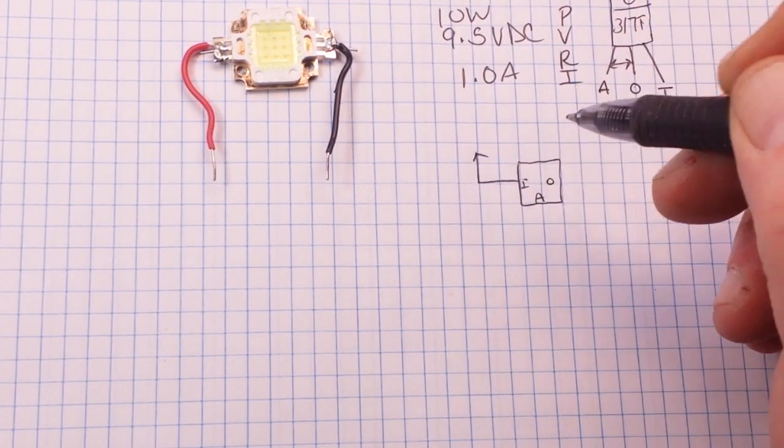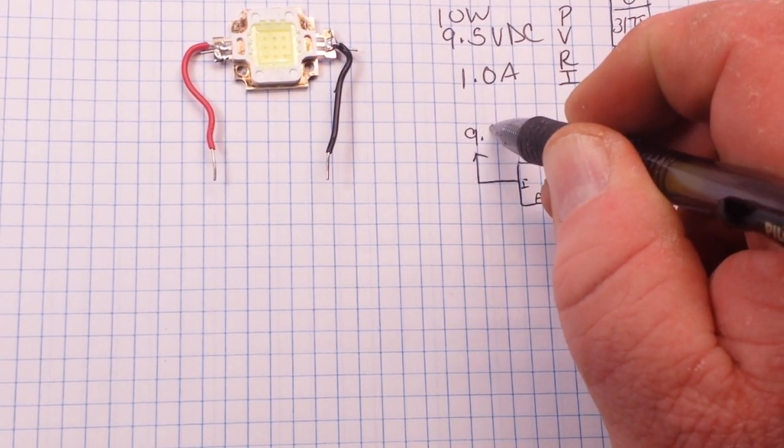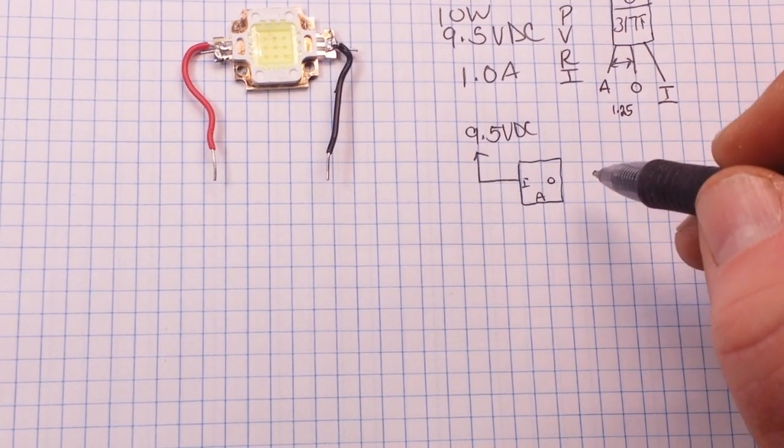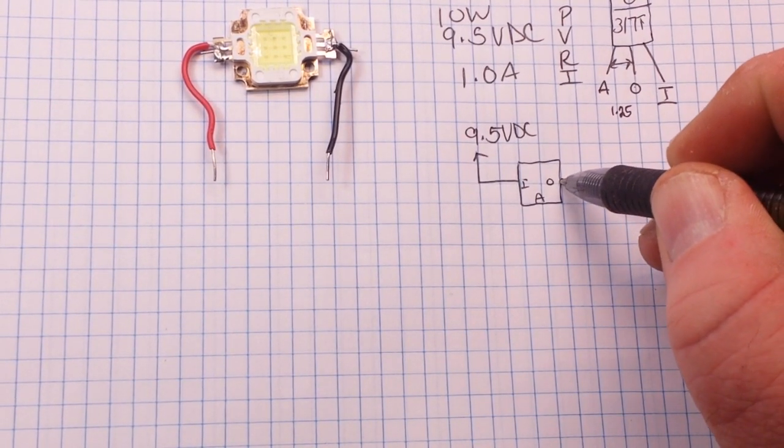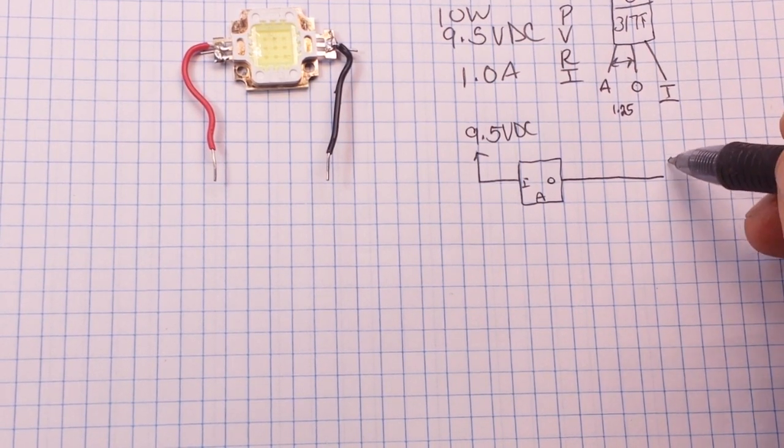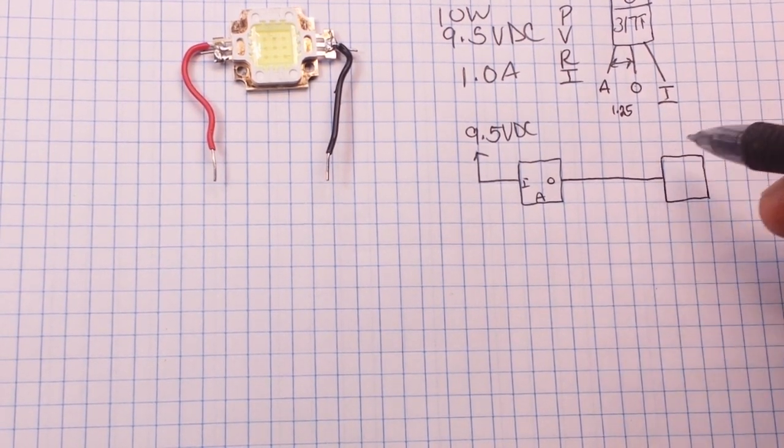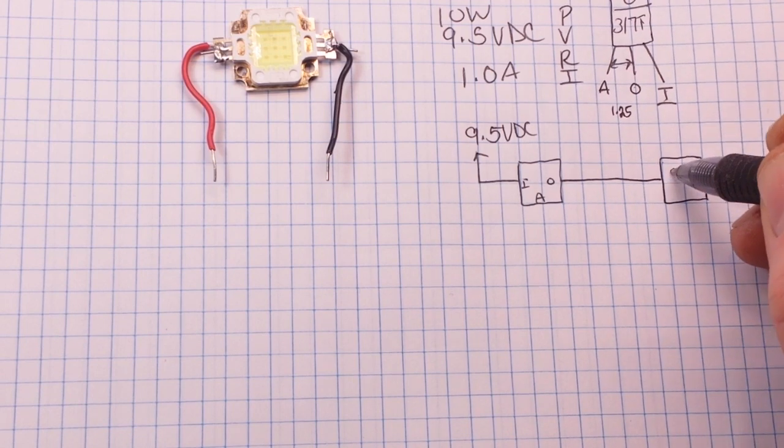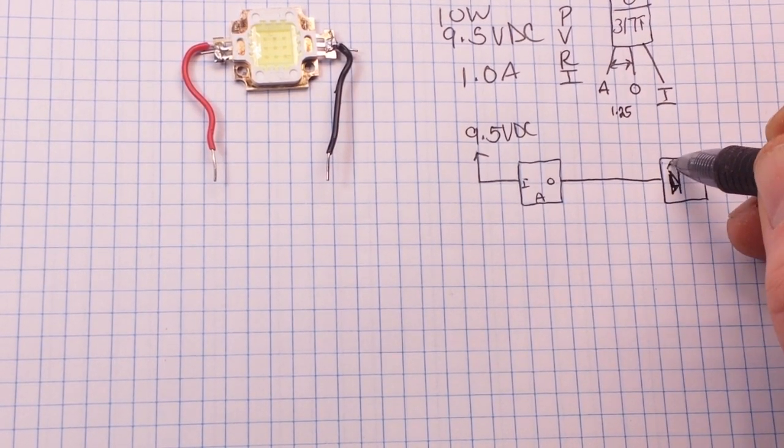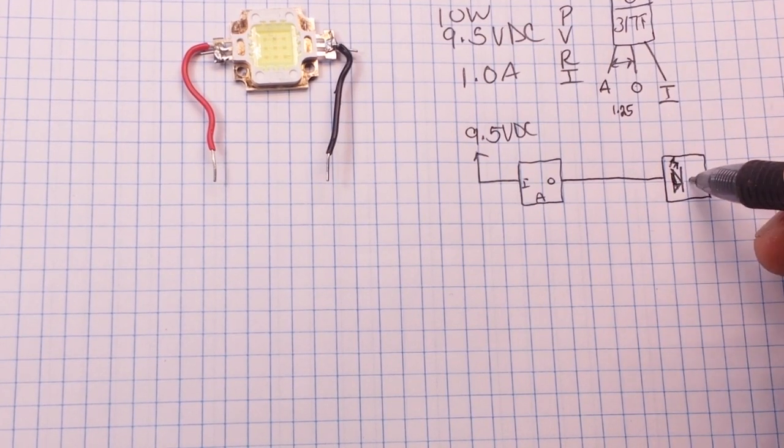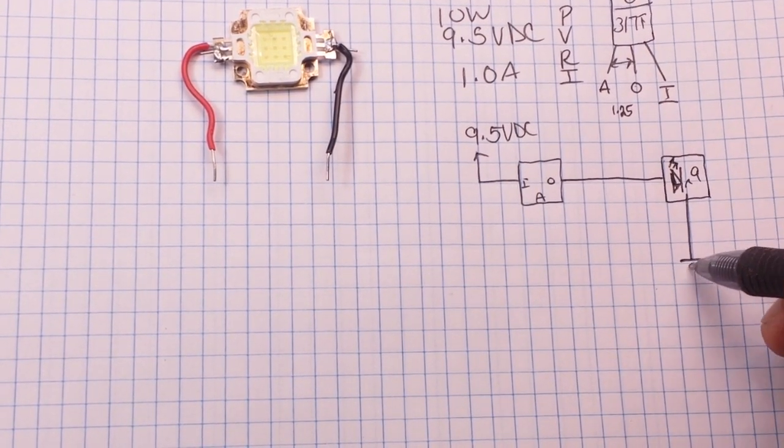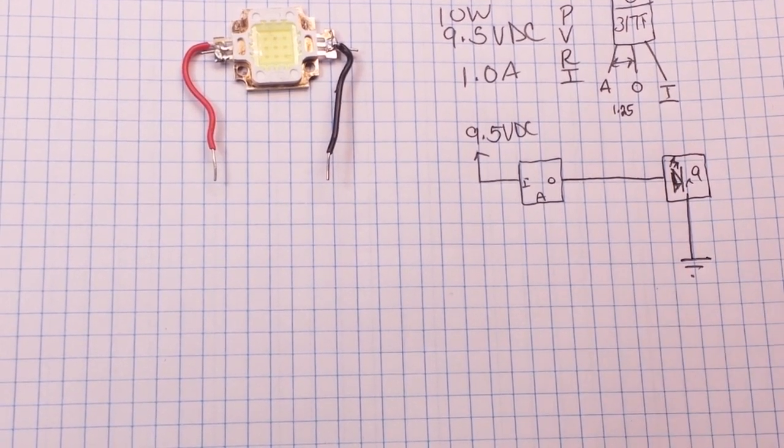We will run our input up to our 9.5 volts DC. And we will take our output over here, and we'll just call this block thing here our LEDs times 9. And that from the output goes to ground.